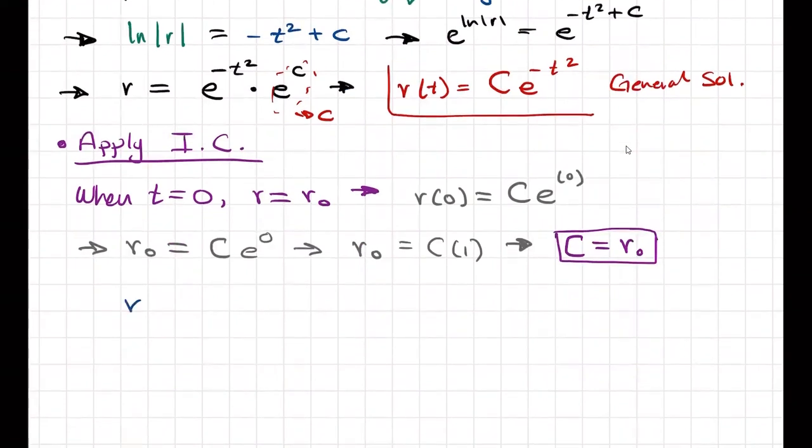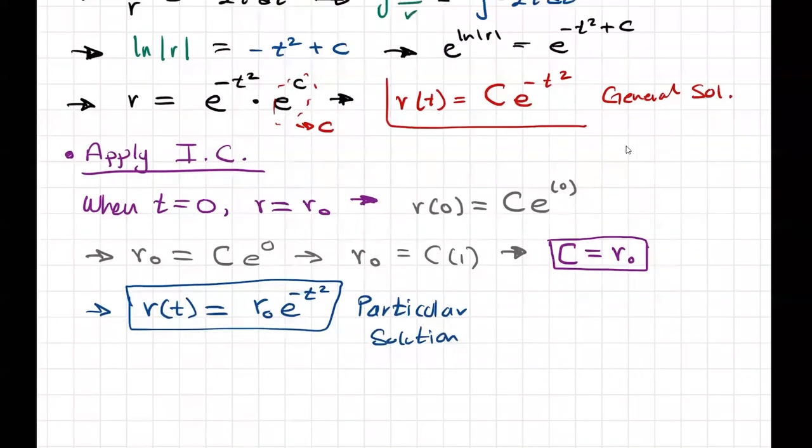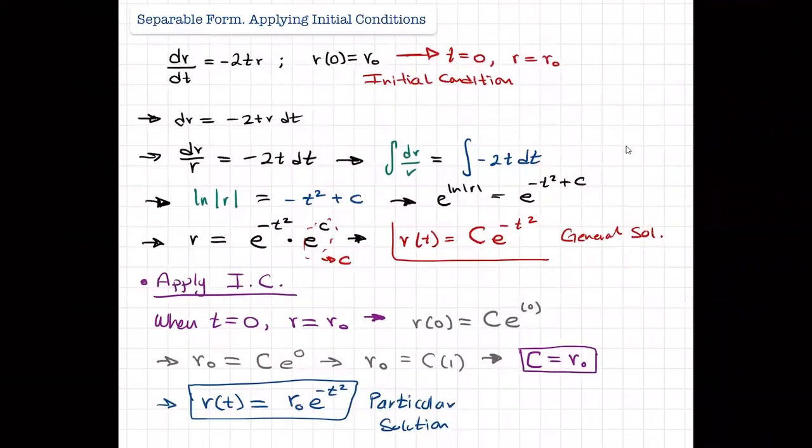r of t equals to r_naught e to the negative t squared. And instead of being a general solution—you know, a solution that is applied for all of the cases—this is a particular solution.